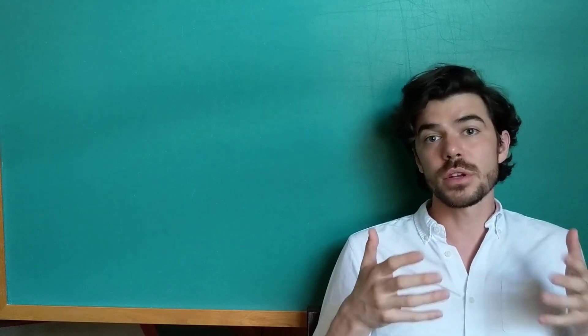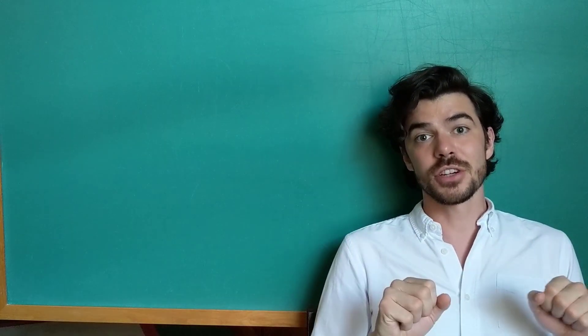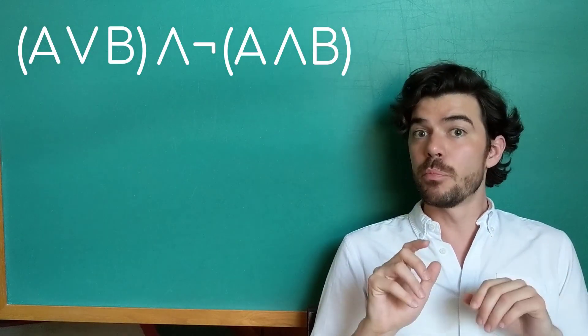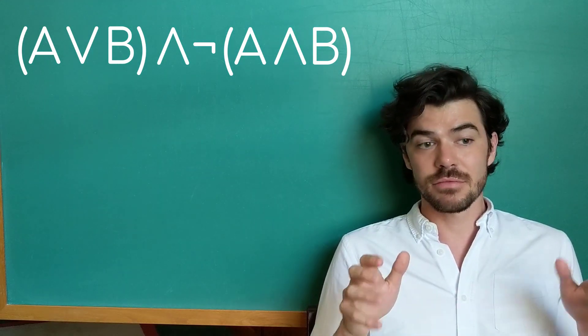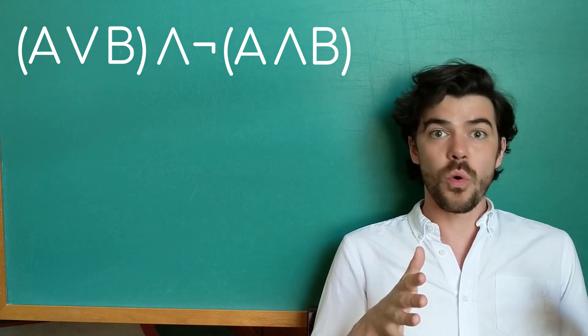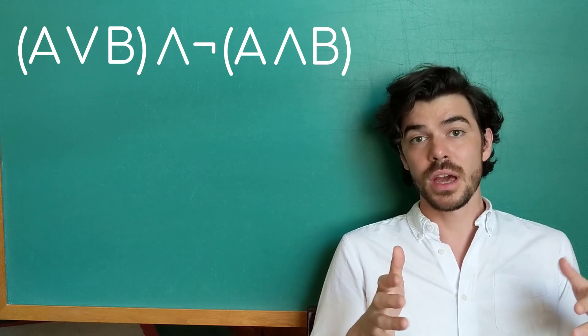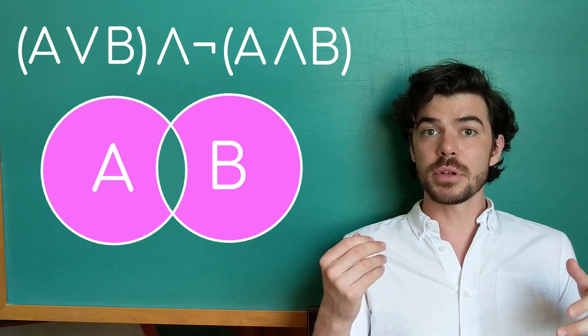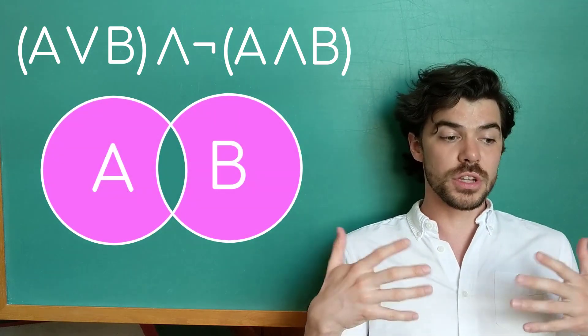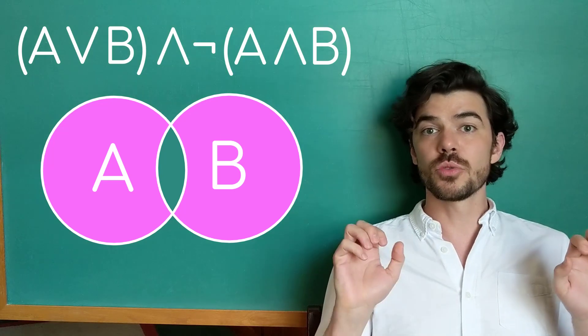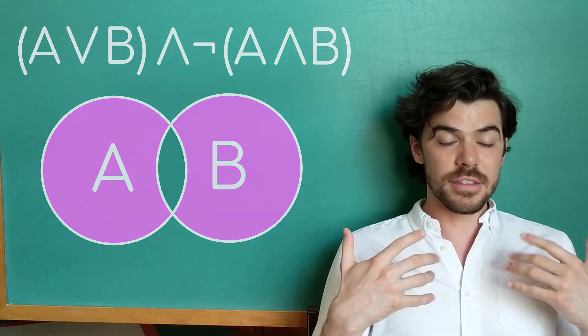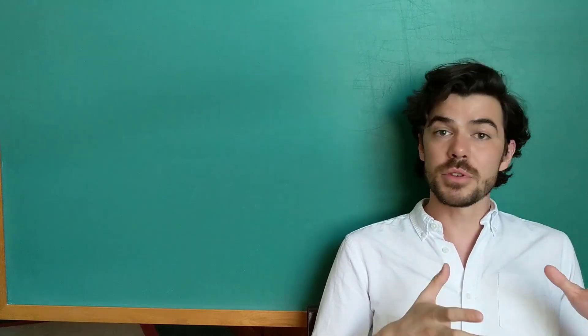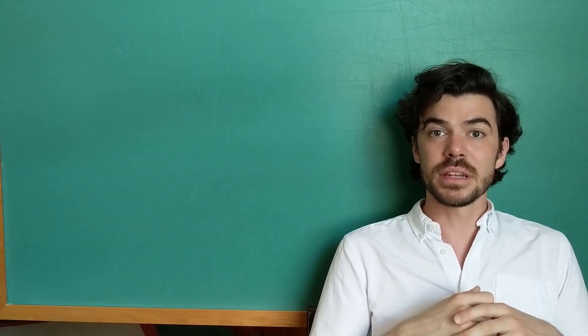Now in an earlier video, we talked about exclusive disjunction, which is A or B but not both. And we can represent this, say Don Quixote is a knight or Don Quixote is famous but not both, by subtracting the overlap between the A and B circles so that we're only talking about where one is true or the other is true, but not where both of them are true. And that's how we can use Venn diagrams to represent the Boolean operators we've been talking about.